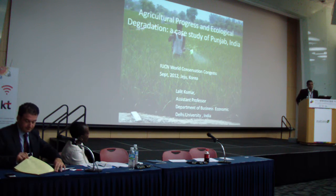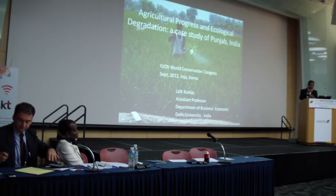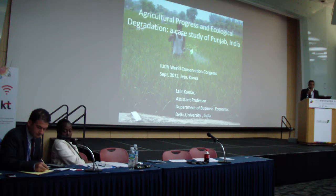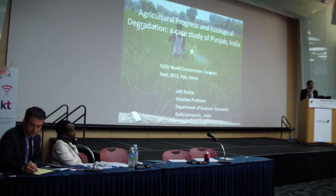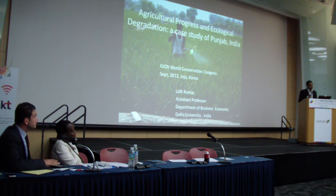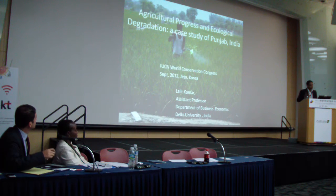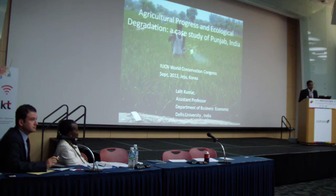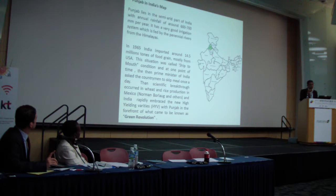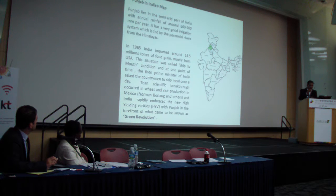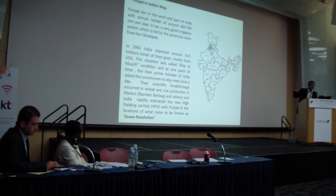I'd like to first thank UNEP and IUCN for the opportunity to speak at this important event. I'm coming from India, a low-income developing country where almost 25–30% of the population lives below the poverty line — having income of less than $2 per day. Food security is a very big issue in India, as many people are unable to make ends meet. Punjab is a state that has produced a lot of food and has taken on the burden of providing food security to the rest of India. Punjab is in the northwestern part of India.